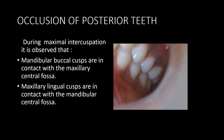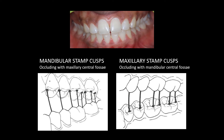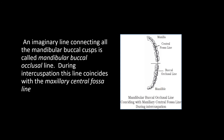Occlusion of the posterior teeth: during maximal intercuspation, the mandibular buccal cusps coincide with the maxillary central fossa. Similarly, the maxillary lingual cusps coincide with the mandibular central fossa. If we join a line connecting all the mandibular buccal cusps, it will coincide with a line connecting all the maxillary central fossa and vice versa. This line is called the mandibular buccal occlusal line.